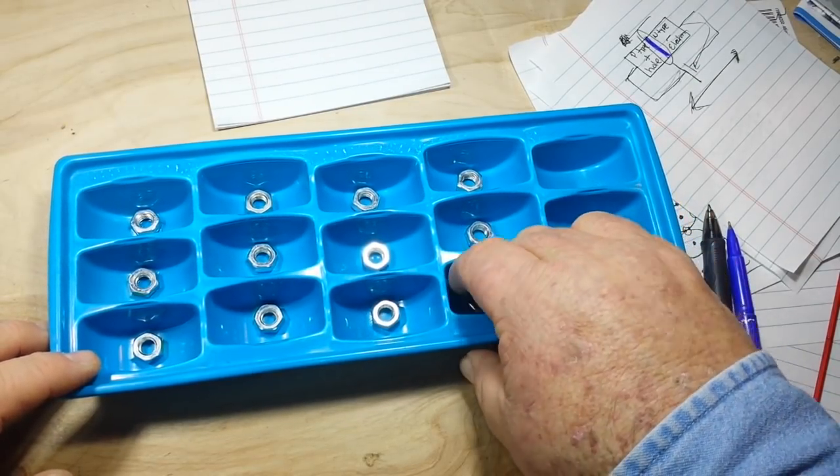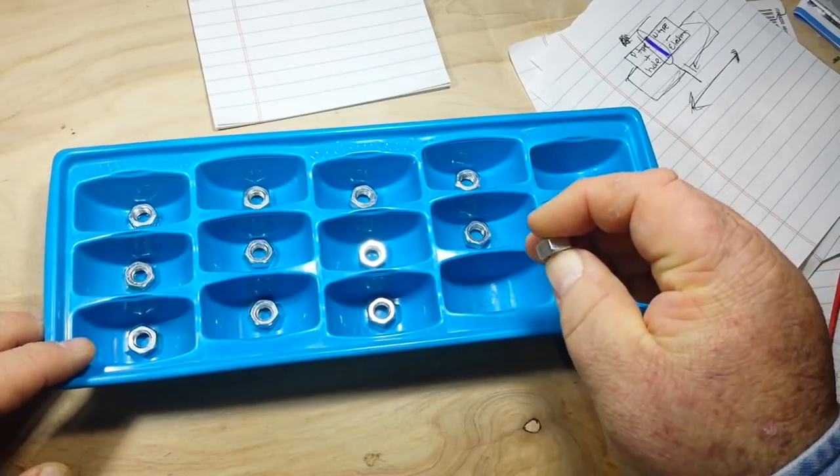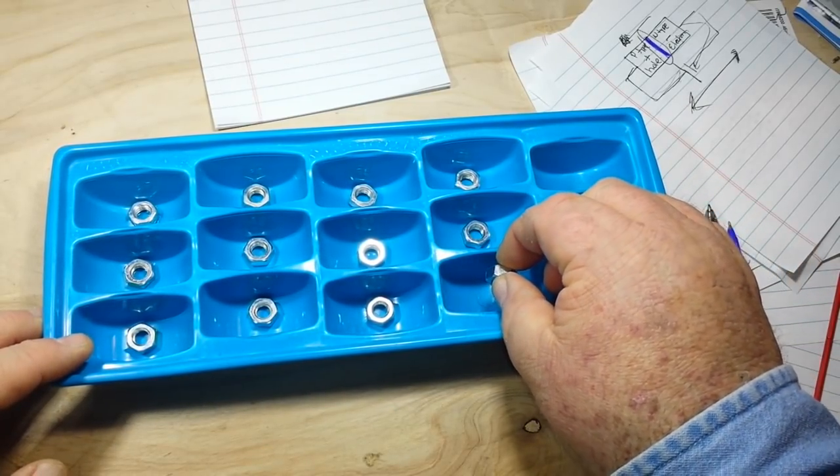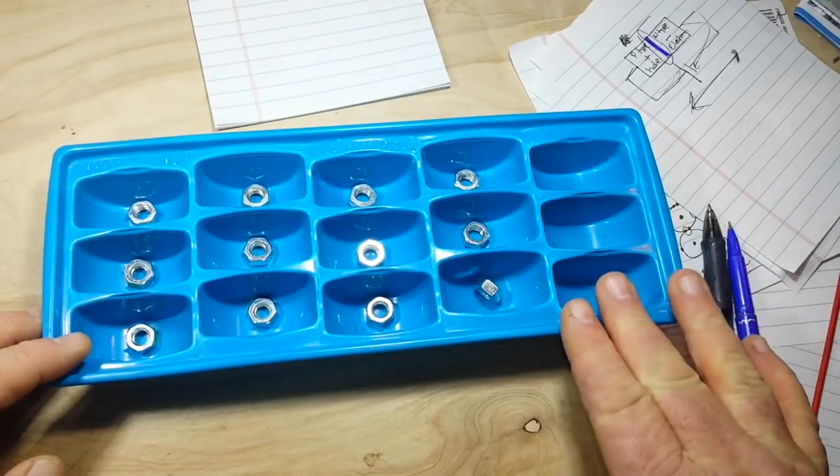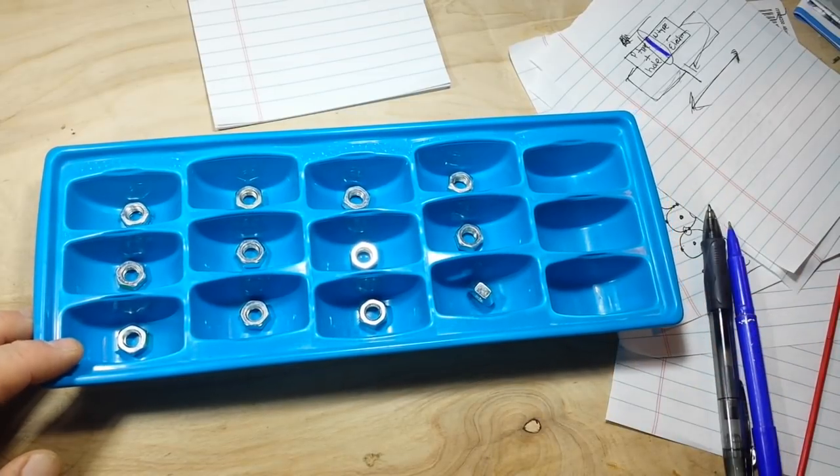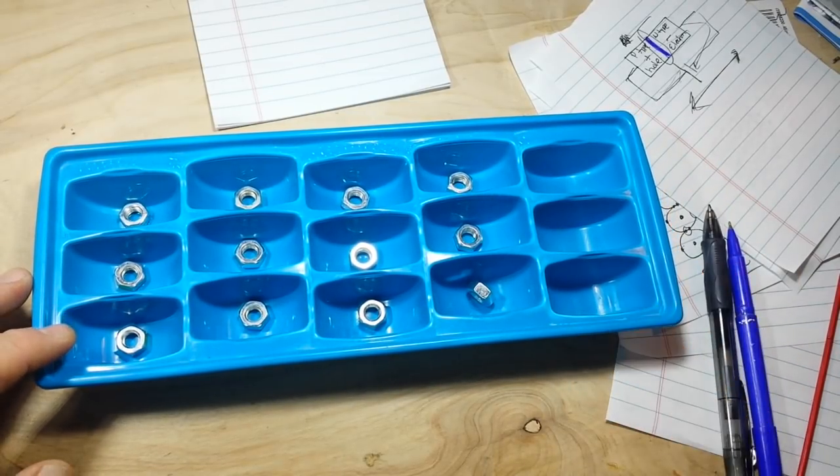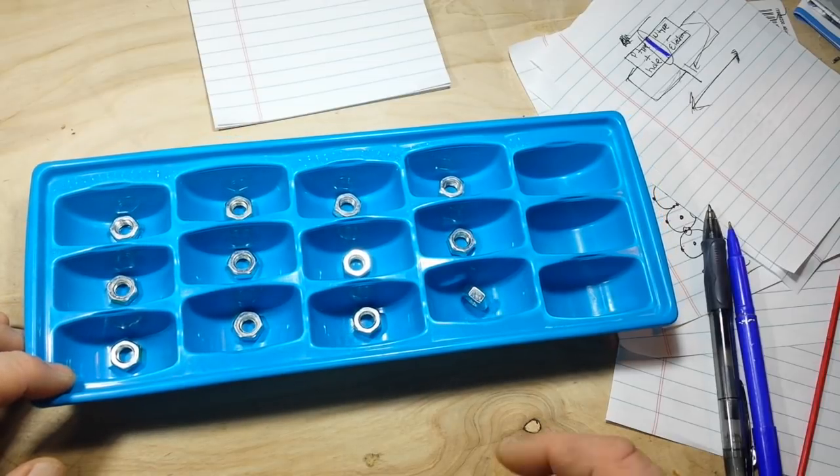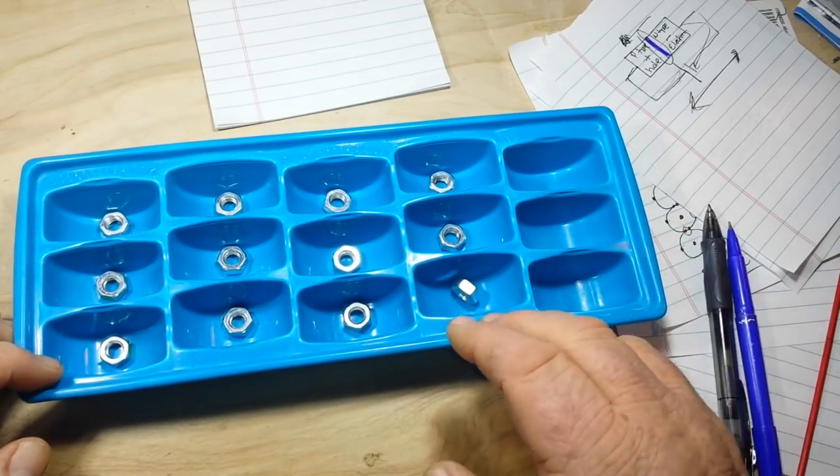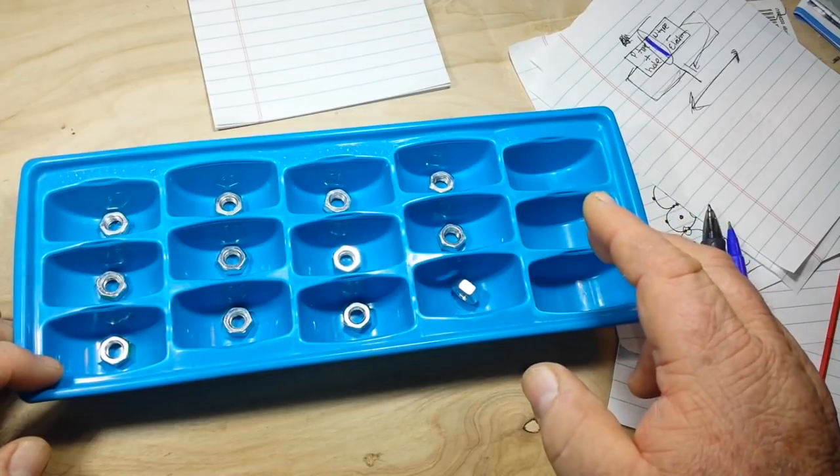So these nuts will represent our electrons, and the spaces of course are the holes. So how is this going to work? Well, here's what's going to happen and it's really simple once you kind of think about it.